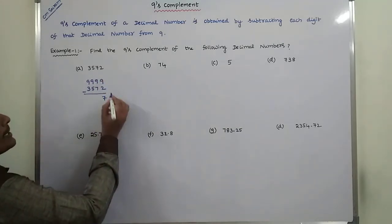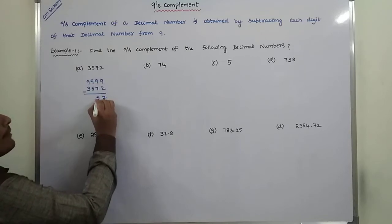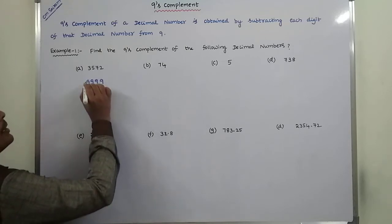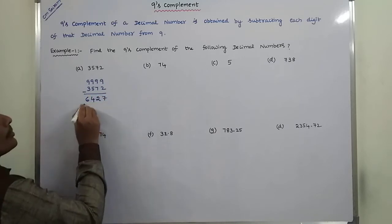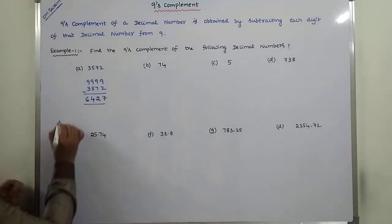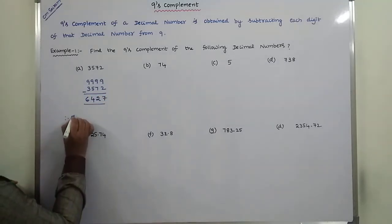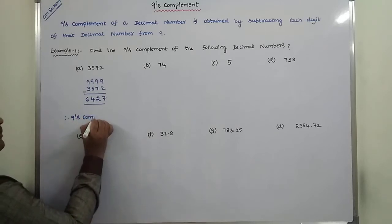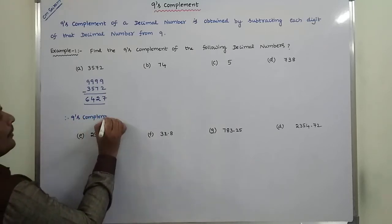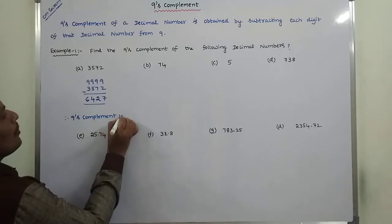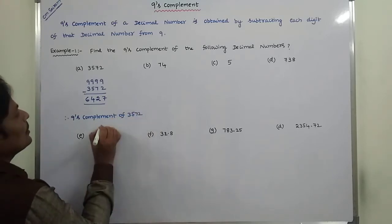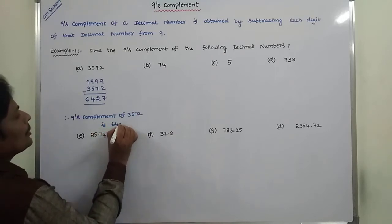9 minus 2 is 7. 9 minus 2 is 7. 9 minus 5 is 4. 9 minus 3 is 6. So the result is 6, 4, 2, 7. Therefore, the 9's complement of 3572 is 6427.